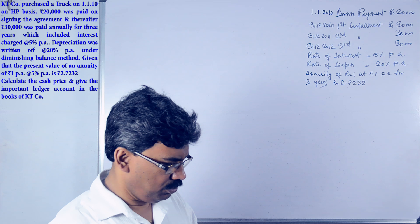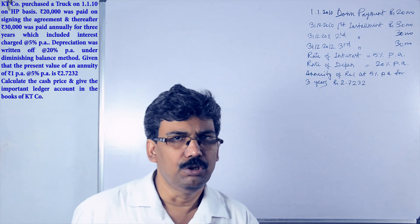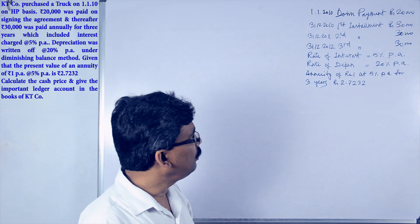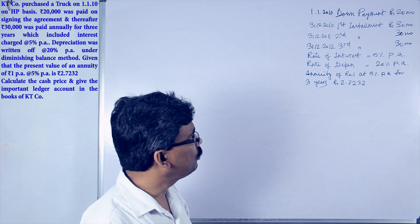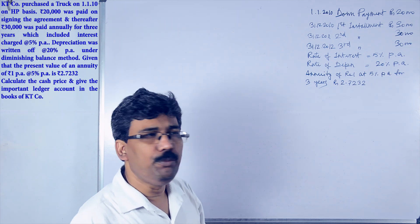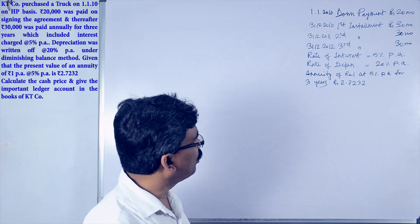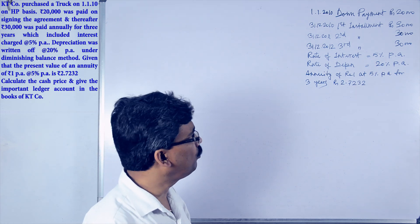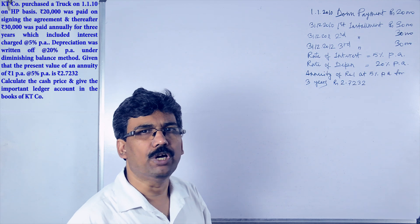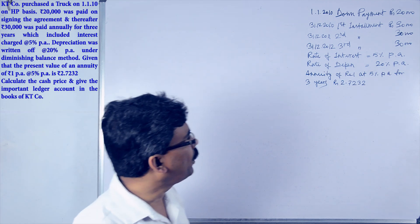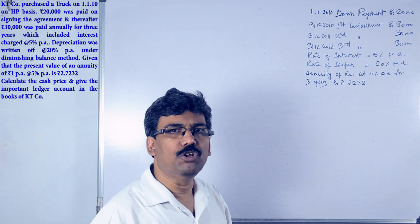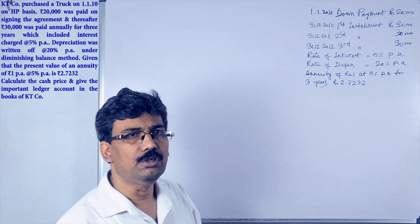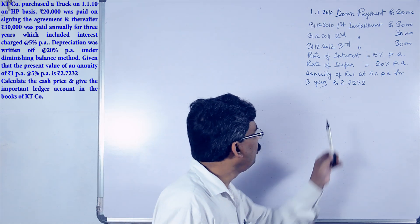Calculate the cash price and prepare the relevant ledger accounts in the books of KT company. On 1-1-2010 the motor truck was purchased, the down payment paid is ₹20,000, and there are three installments each of ₹30,000. The total payment can be calculated, but the cash price cannot be directly found, and without the cash price, the interest for each specific year — first, second, and third — is not possible to calculate. That is why the annuity factor is provided.